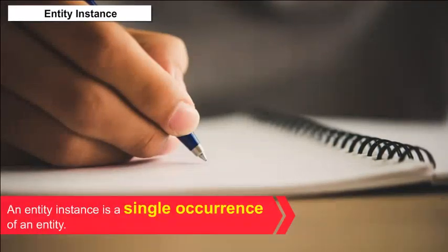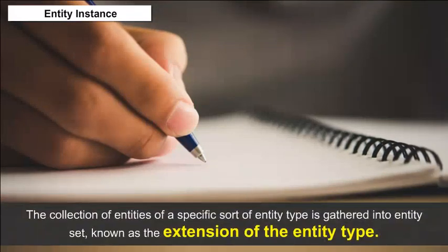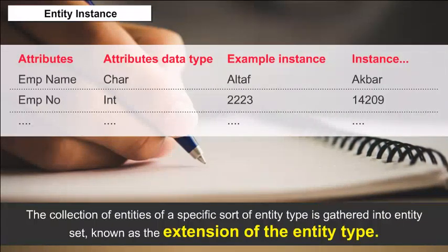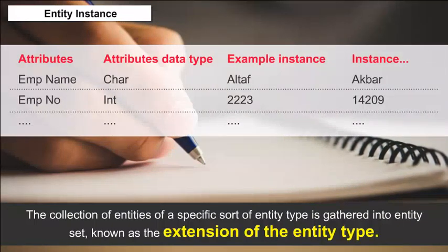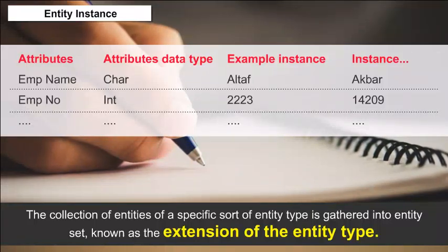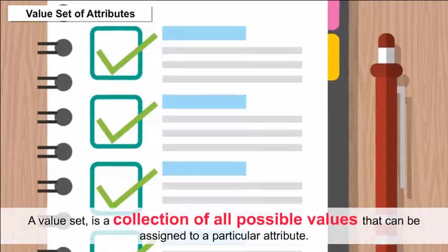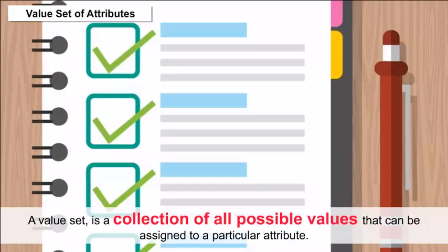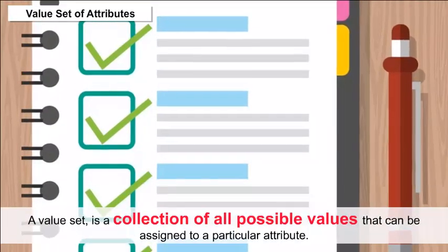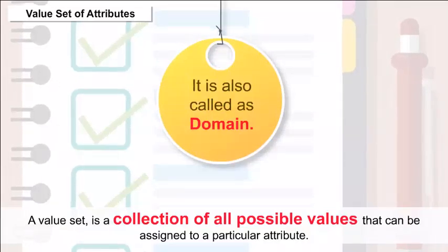What is an entity set? An entity set is a set of entities having the same entity type. Entity Instance — an entity instance is a single occurrence of an entity. The collection of entities of a specific sort of entity type is gathered into an entity set, known as the extension of the entity type. Value Set of Attributes — a value set is a collection of all possible values that can be assigned to a particular attribute, also called as domain.